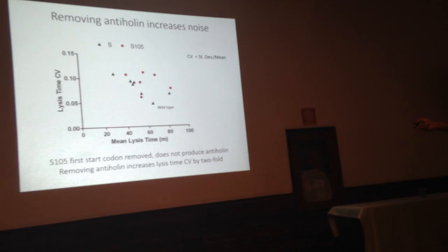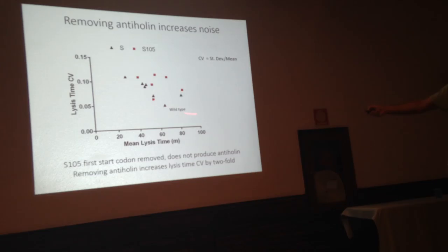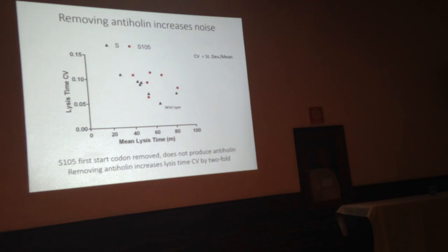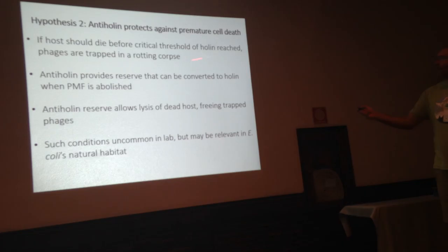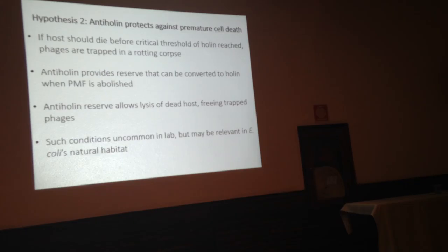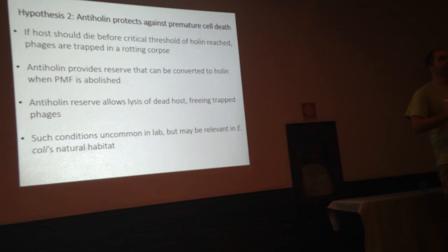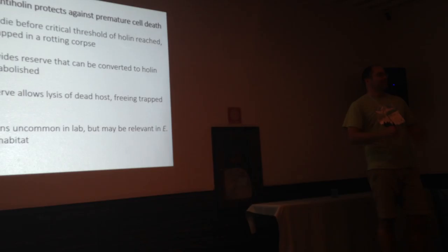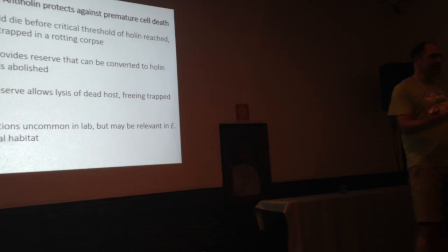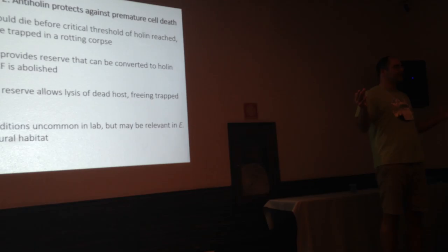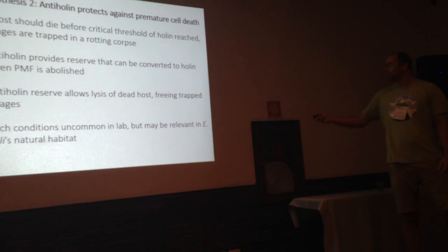There's some data for this: when we removed the first start codon, abolishing anti-holin, the amount of variation for those cells is much greater than the variation we see in the wild type. The second hypothesis is that anti-holin can protect against premature cell death. If the cell should die before the bacteriophage have lysed it, you have a bunch of progeny trapped inside needing to be freed. So the cell dies, the proton motive force is removed, the anti-holin is converted to holin, giving the cell enough active holin to lyse open that dead cell and release those progeny from the host.